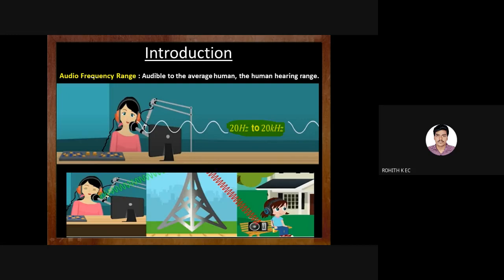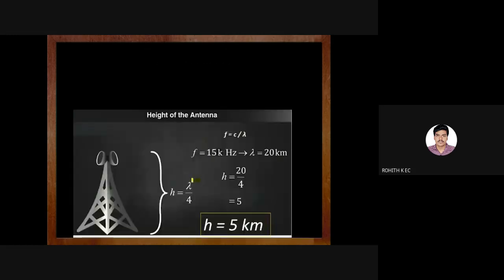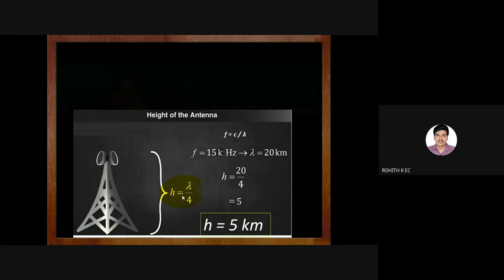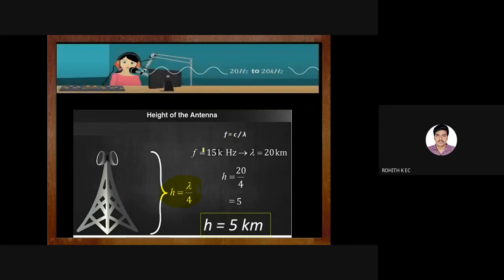The transmitter will transmit the signal and at the receiver we will receive the signal through modulation. But before we go to modulation, let us understand why modulation came into picture. For transmission of signals reliably over an antenna for long-distance communication, the height of the antenna should be h = λ/4.